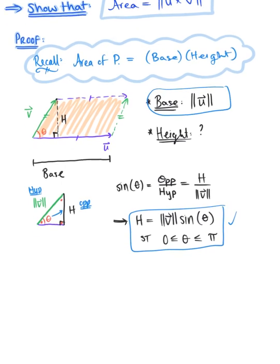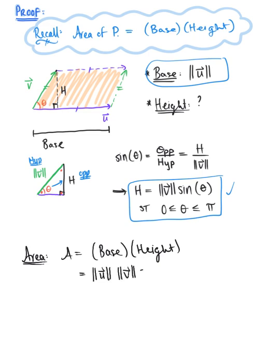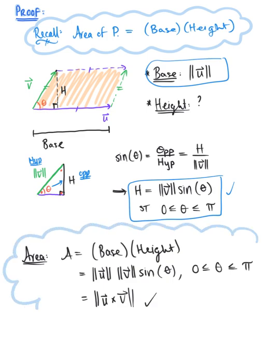Therefore, the area of the parallelogram — which is base times height — is the magnitude of vector u, multiplied by the magnitude of vector v times sine of theta, such that theta is between zero and pi. And this is exactly the definition of the magnitude of vector u cross vector v. We've confirmed where the formula comes from, and we're ready to explore some examples.